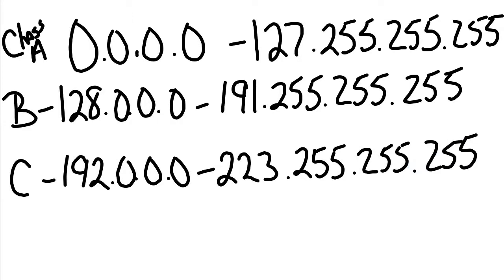Now there might be a few people who say those ranges aren't exactly right — these are gross or bulk numbers. There are a few exceptions, such as a slice of the Class A 127s that are reserved for a different special purpose. So yes, these are the gross numbers, not the exact perfect figures.